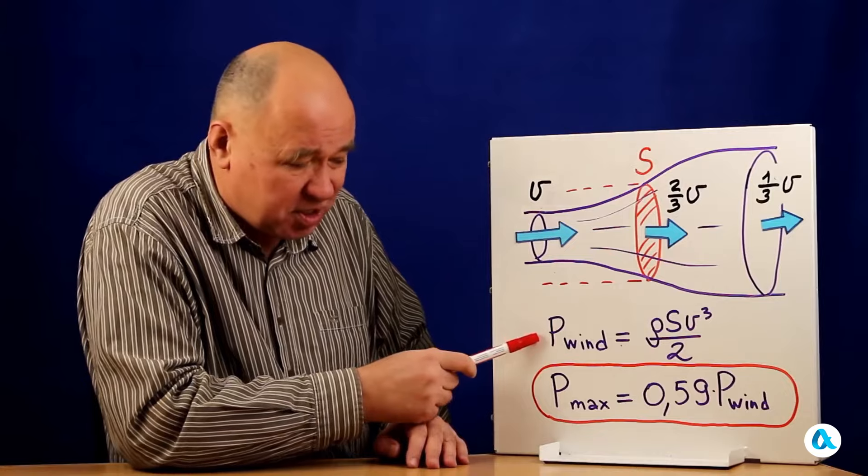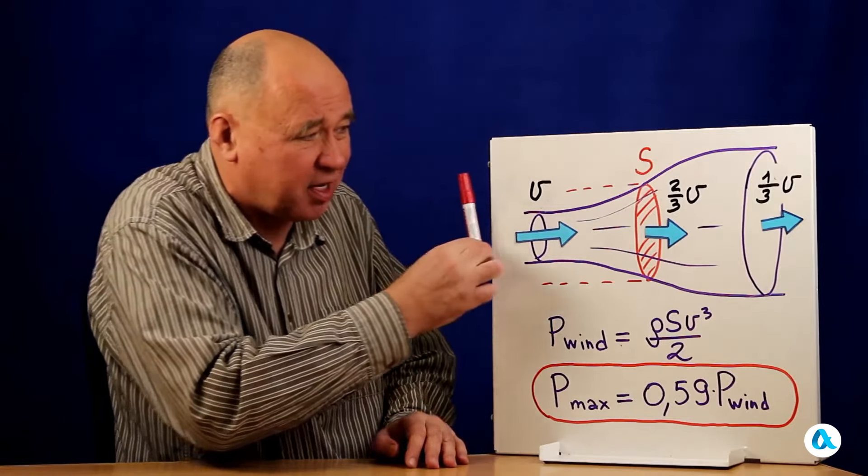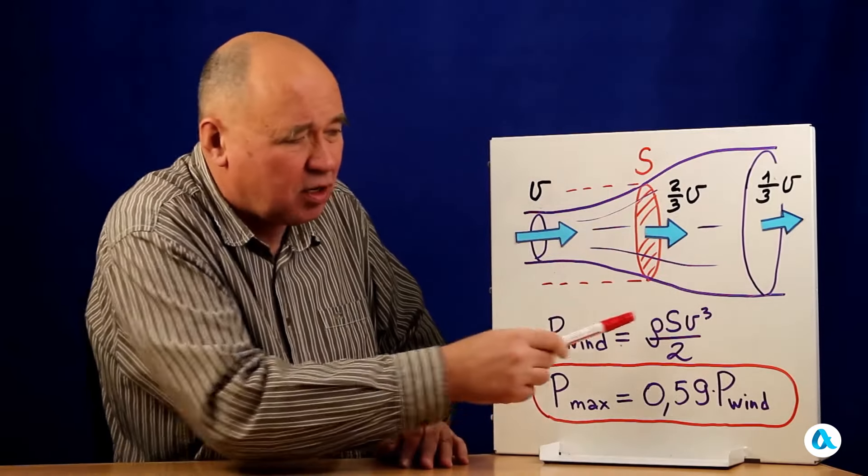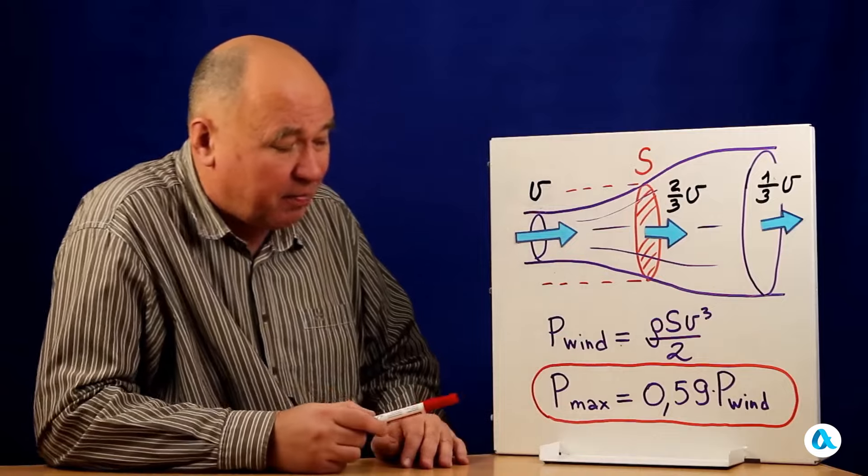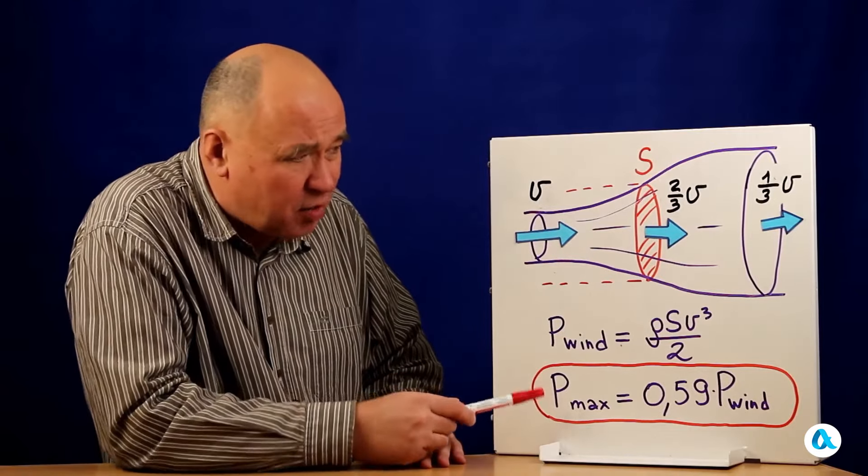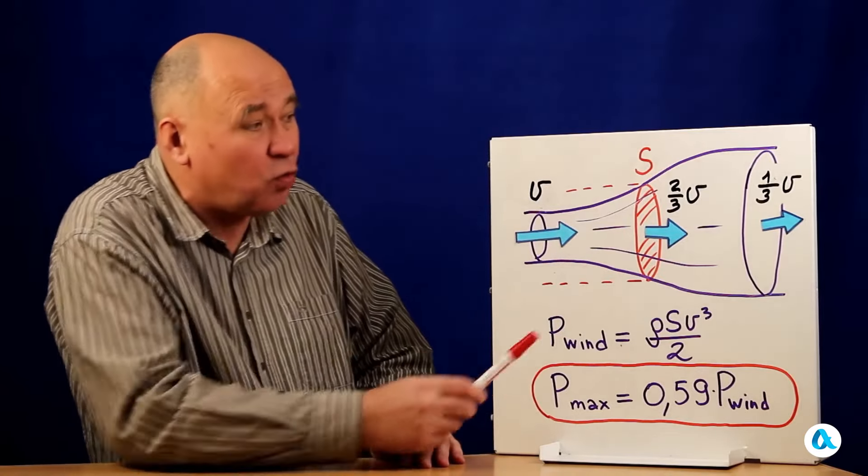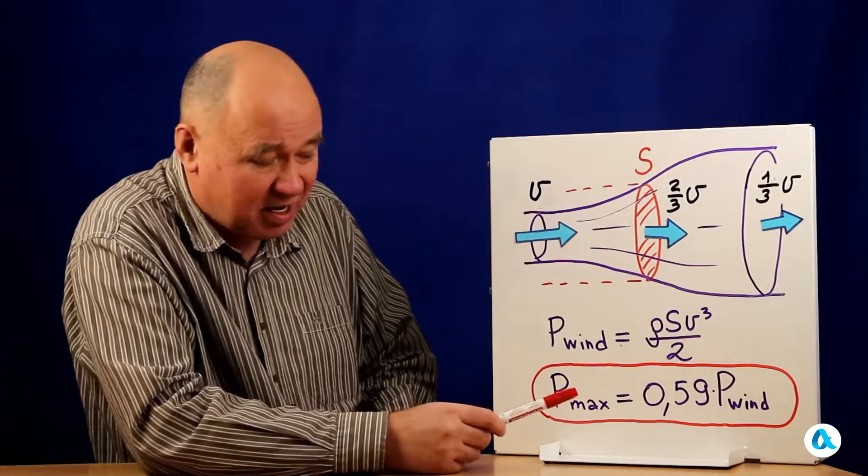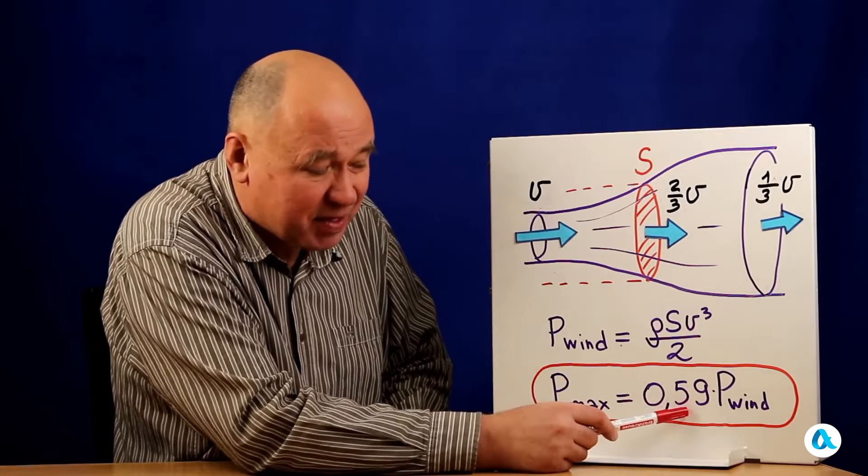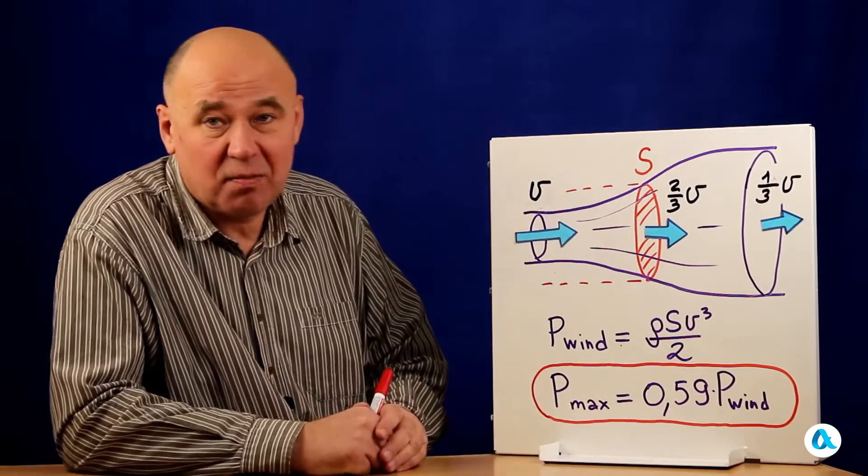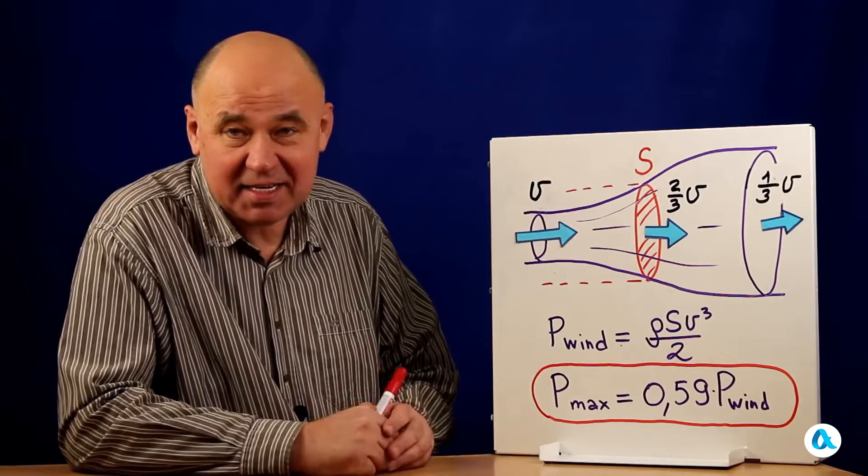We have already introduced the notation. The power of the wind flowing through the area s is ρsv cubed divided by 2. And now we determine the maximum power that can be extracted from the wind by a wind turbine of this cross-section. It is 59% of the corresponding wind power. This is Betz's law.